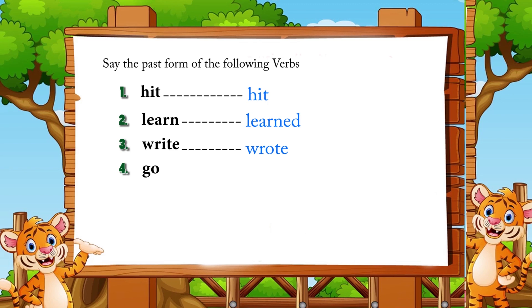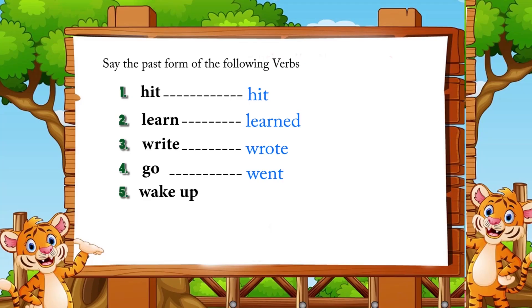Number four: go. If your answer is went, very nice. The past form of go is went. Number five: wake up. If you said woke up, very good. The past form of wake up is woke up.